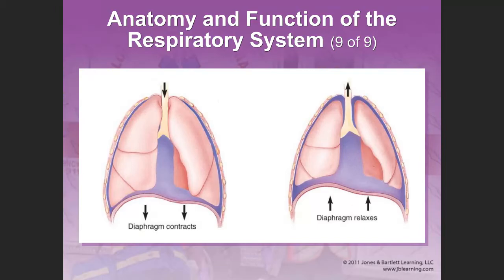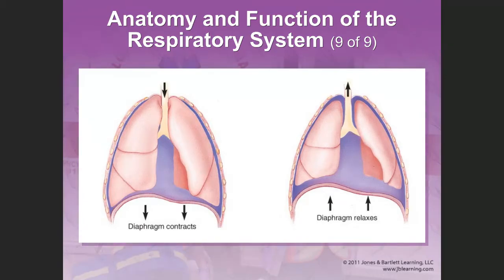When the diaphragm contracts and moves downward, the size of the thoracic cavity increases, creating a negative pressure that pulls air into the lungs. When the diaphragm relaxes during exhalation, it moves upward, decreasing the size of the thoracic cavity, which increases pressure inside the lungs and pushes air out. Breathe in with negative pressure, breathe out with positive pressure. Inhalation is active, exhalation is passive.